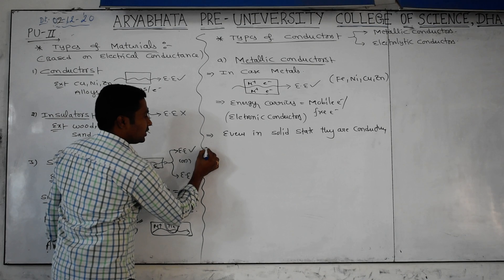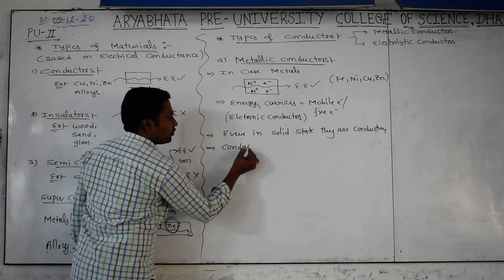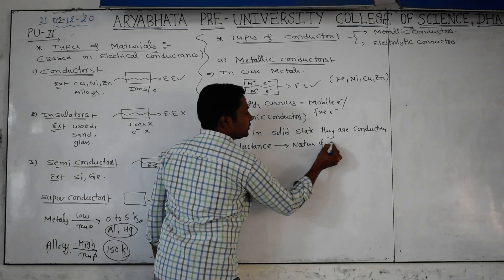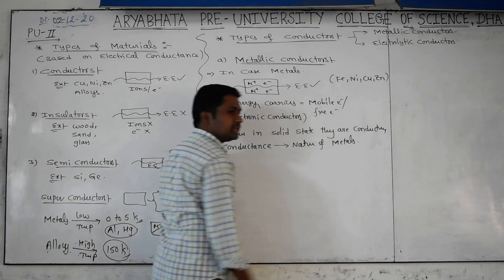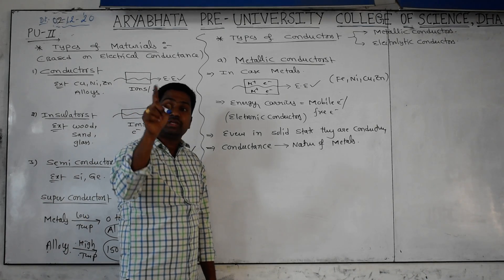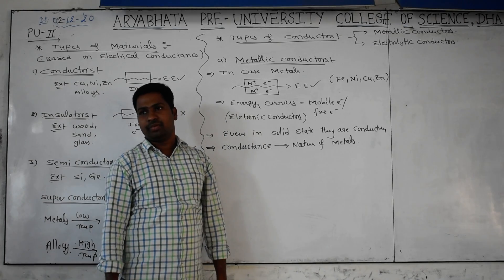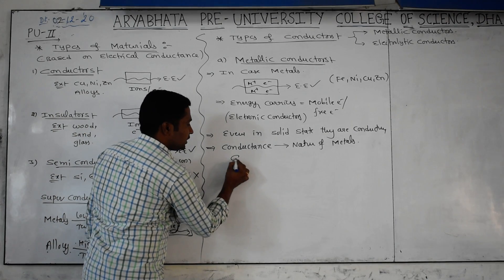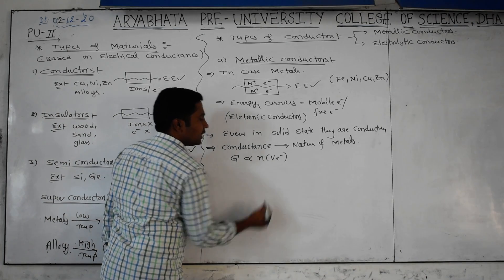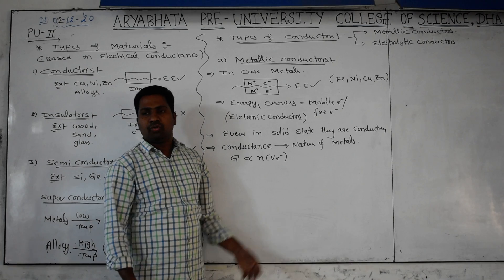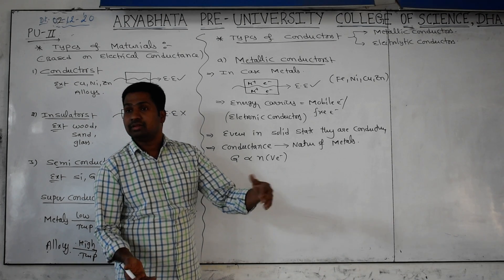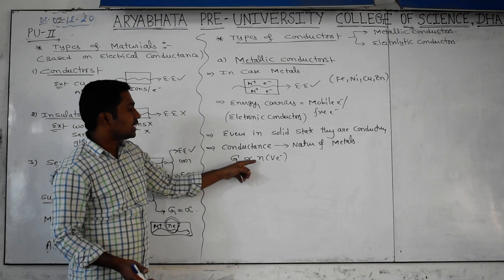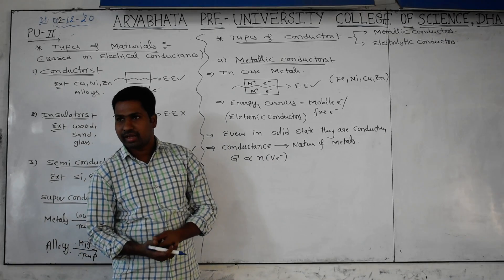The conductance of a metallic conductor depends on the nature of the metal - all metals do not have the same conductance. Conductance is directly proportional to the number of valence electrons in that metal. If there is only one valence electron it carries less energy; three valence electrons carry more energy. So conductance of metallic conductors is directly proportional to the number of valence electrons.